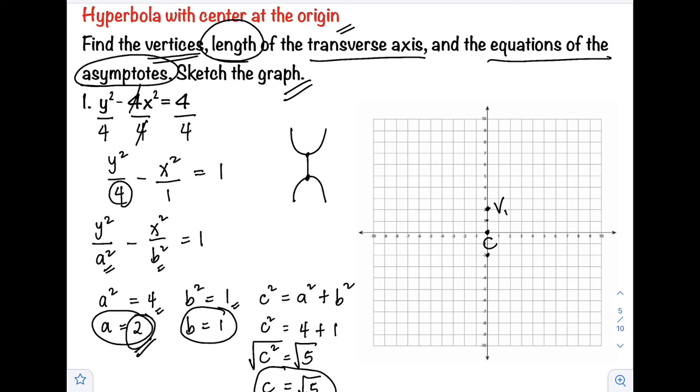Then to get our conjugate axis, we'll use b which equals 1. That is found on the x-axis. Count 1 unit to the right, then 1 unit to the left. When you connect those, this is now our conjugate axis.